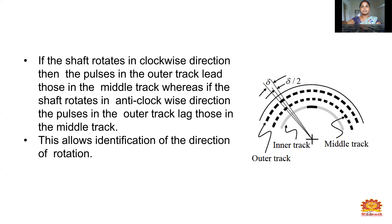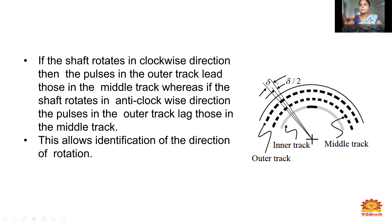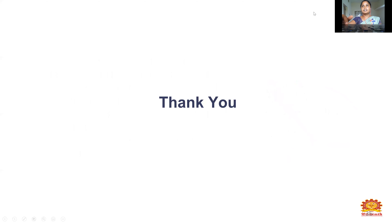This diagram represents the incremental encoder with sigma and sigma-by-two values, differentiating between the inner track, middle track, and outer track. The space between the middle track holes is shown. We can calculate the rotation of the incremental encoders from this. Thank you.